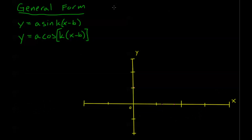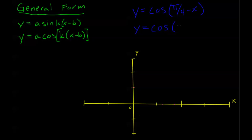Let's say I have y equals cosine of pi over 4 minus x. This is a bit easier than the last example. The biggest reason I want to do this is to remind you of the even and odd properties again. I'm very close to general form, but I need to have a positive x. Remember, cosine is an even function — that means cosine of negative x equals cosine of positive x. So I can effectively pull out a negative and it doesn't do anything to cosine. Cosine of pi over 4 minus x is the exact same thing as cosine of x minus pi over 4.